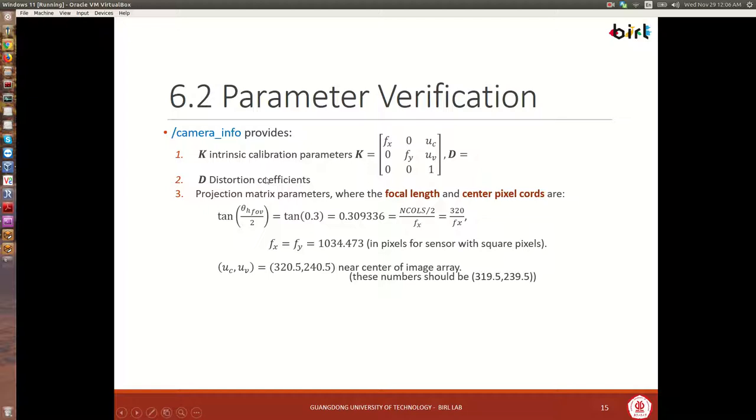And then zero focal length in the y direction. And then the center pixel along the rows, the uv parameter, and then 0, 0, 1. So this is how the information is going to show up for us. D will be the one for distortion coefficients. And the projection matrix, the p matrix, will also have focal length and center pixel coordinates. Now, I told you earlier that from the field of view, there was a way for us to extract the focal length.